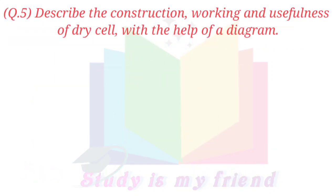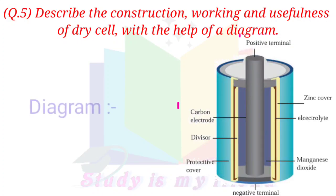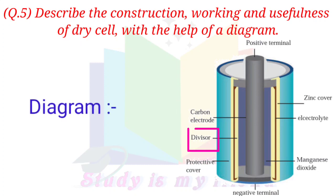Question 5. Describe the construction, working and usefulness of a dry cell with the help of a diagram. Answer. Positive terminal — carbon electrode.